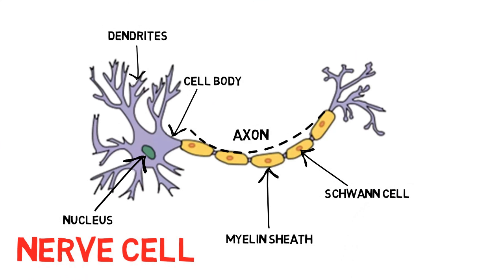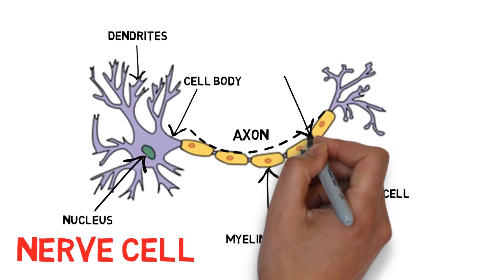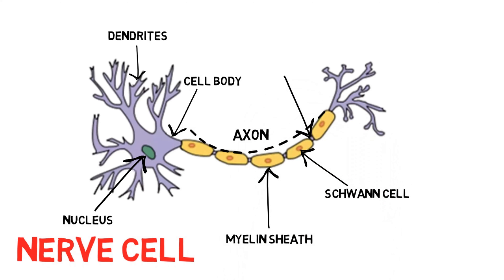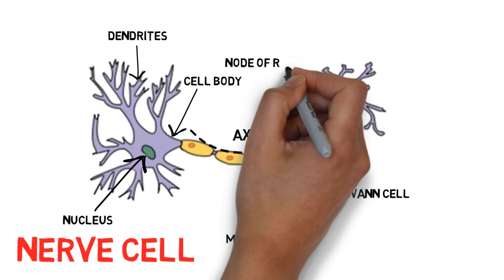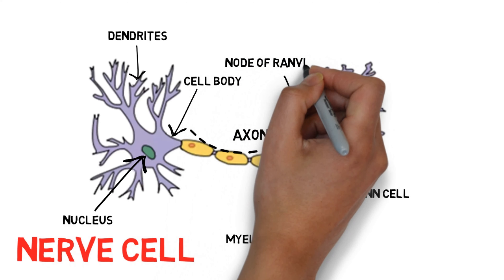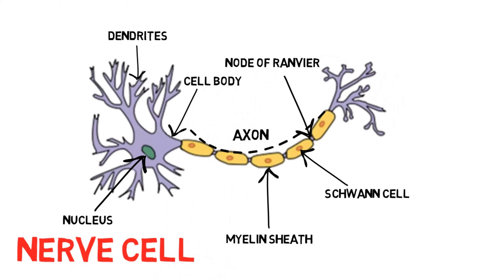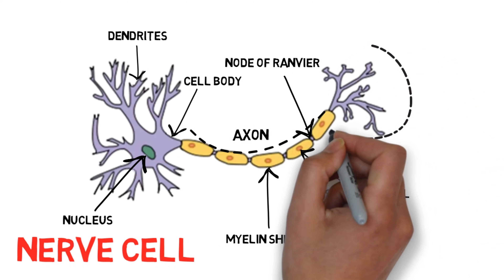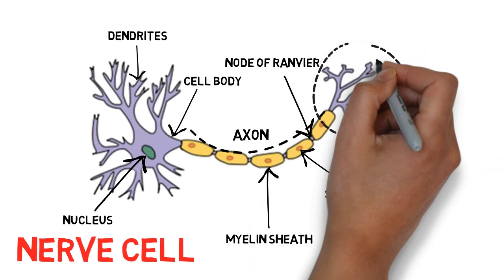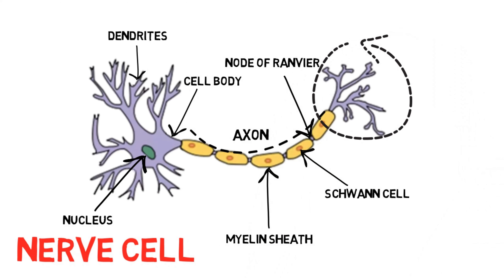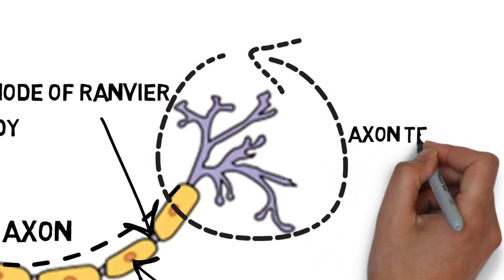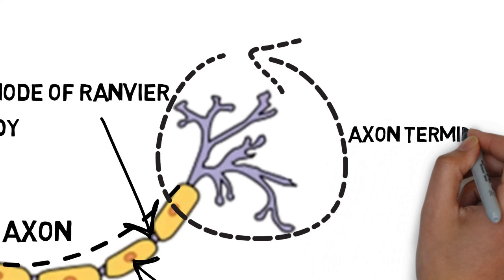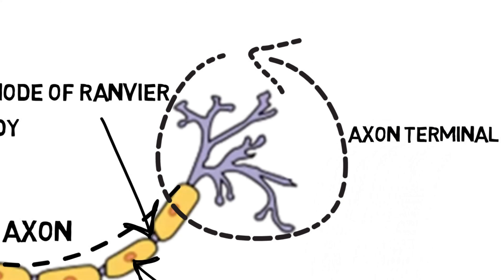These are the gaps in the axon called as nodes of Ranvier. They are there for fast generation of the nerve impulse. Lastly, this is the axon terminal. Before proceeding further, let's understand the meaning of some basic terms.